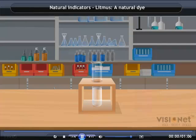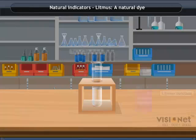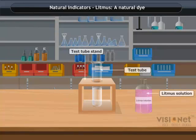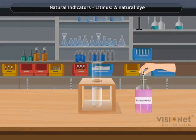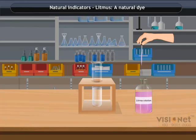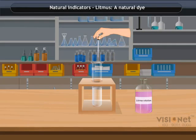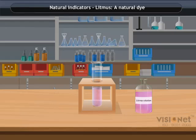Natural Indicators. The most commonly used natural indicator is litmus. It is extracted from lichens. It gives a mauve or purple color in distilled water.